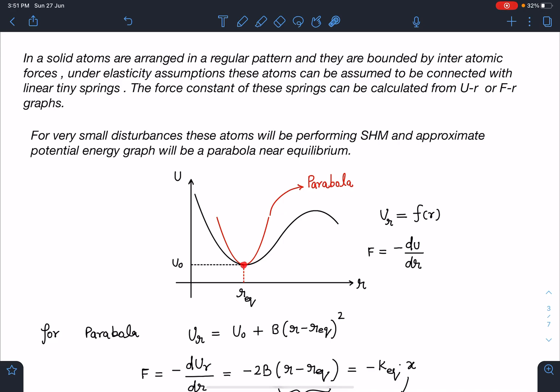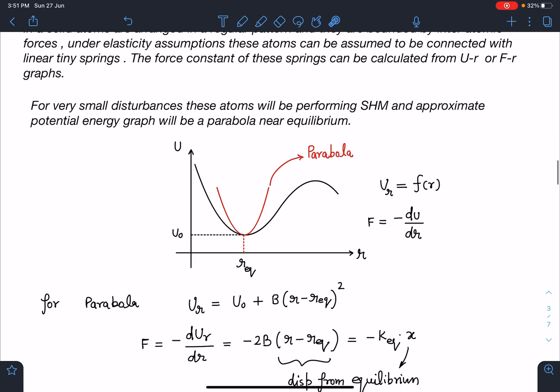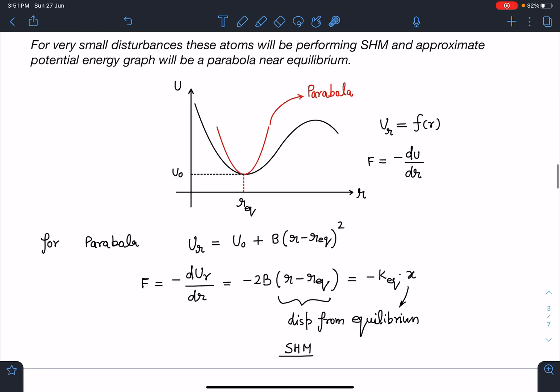I'm writing this parabola as y minus k equals some constant times (x - h)². That logic I'm using here. If I differentiate this, I'm going to get this force value here, minus dU/dr, which is going to come as -2B(r - r_eq). This r - r_eq is the displacement from equilibrium.